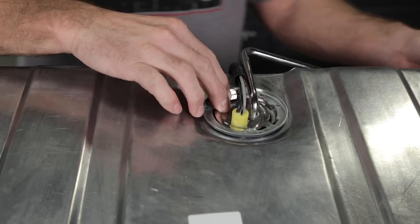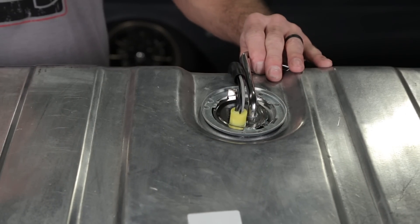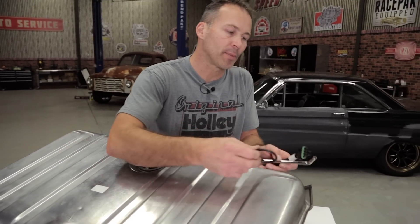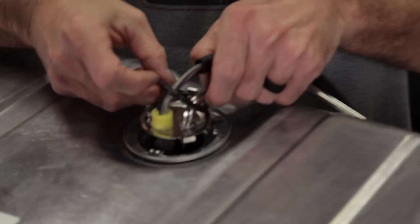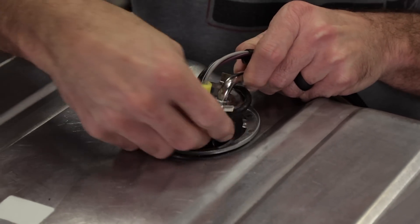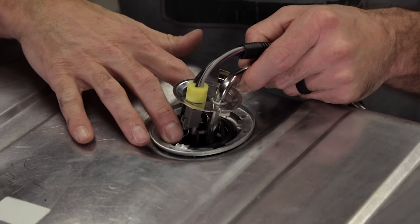There may be alignment tabs on your tank. If there are, make sure that you have them aligned correctly. Now we'll need to feed the included o-ring over the fuel supply line as well as the wiring harness. Slide it down and then stretch it over the bulkhead. Center the o-ring in the opening on your fuel tank.